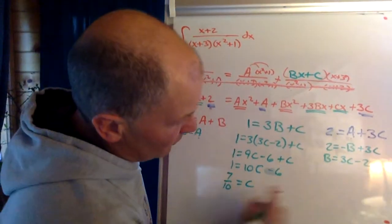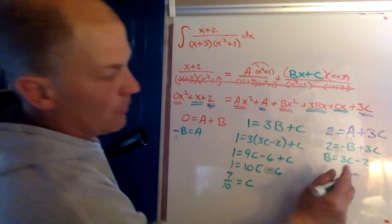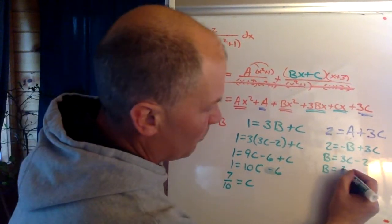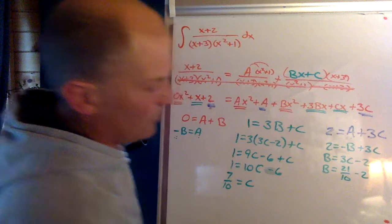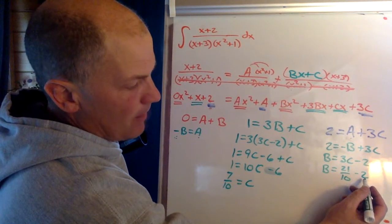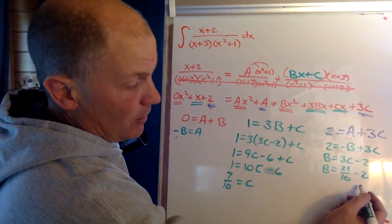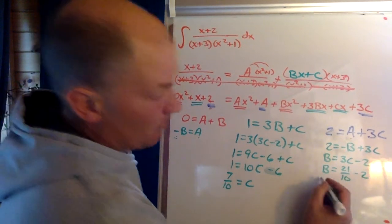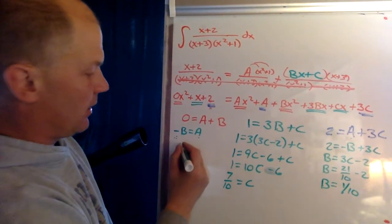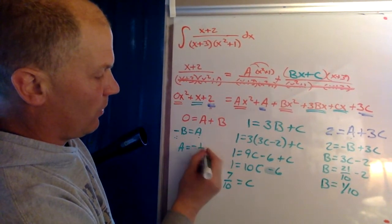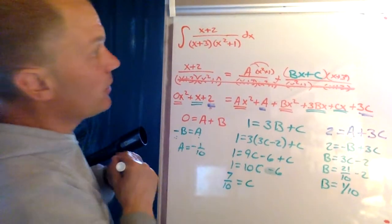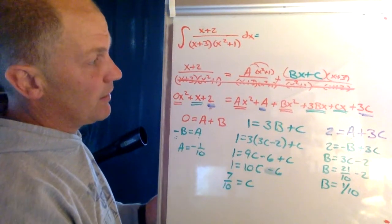So I can use this information to come back here and get b. So I'm going to say b is three times, so that's going to be 21 over 10 minus 2. Well, negative 2 could be negative 20 over 10. So that means b is just one tenth. And if b is one tenth, then a is negative one tenth. All right, so now I have a, b, and c. I worked really really hard to do that algebra to get a, b, and c.